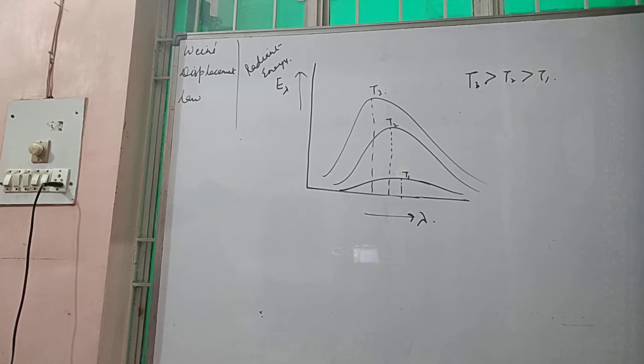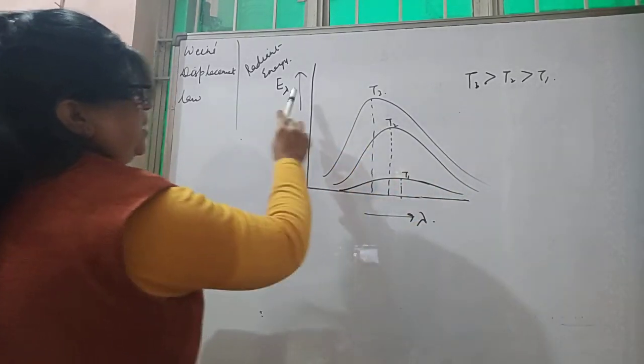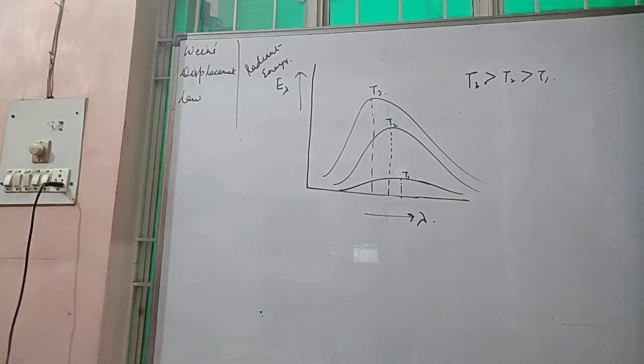The area enclosed by the curve represents the total radiant energy. This is covering a smaller area, a larger area and a larger area which is denoting the radiant energy.